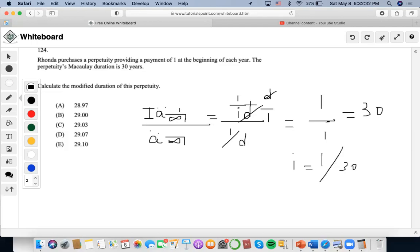Now, to calculate the modified duration of this perpetuity, well, how could we get from MACD to mod D? We would have to multiply MACD by v to get mod D. So, our MACD is 30, we would have to multiply by v or 1 over the effective interest rate. So it would be 1 plus i or 1 plus 1 over 30 to get mod D. So let's calculate this.